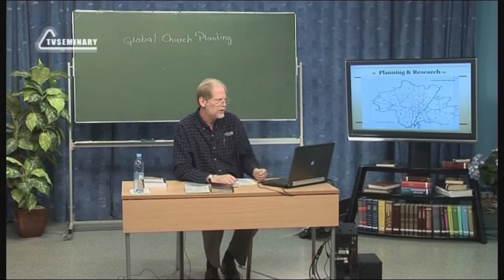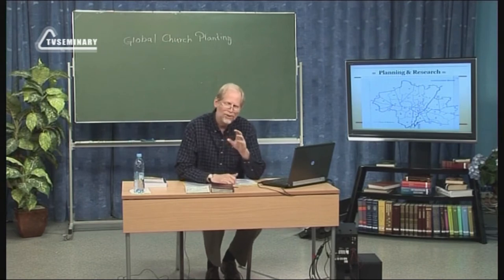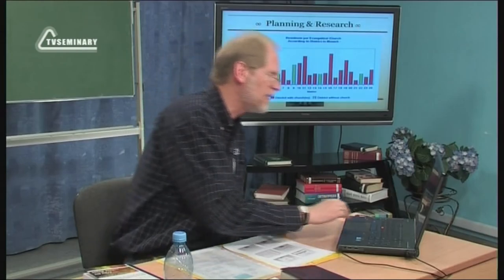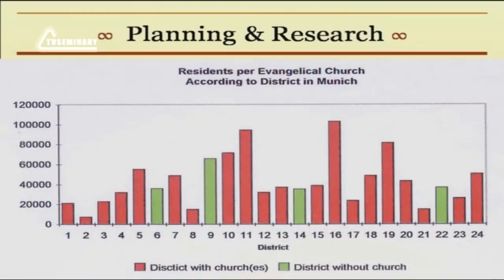One of the ways we mapped this out was to find out the population of each city district. All of this statistical data — which back then wasn't available online, but nowadays is — tells you how many people live in these districts, what's the population structure, and how many churches are there. We calculated the ratio: number of residents per church. In the inner city districts in the center of town, you had roughly one church per 10,000 or even 20,000 people. That means if these churches were really going to be evangelistic, one church in District 1 would have to reach 20,000 people.